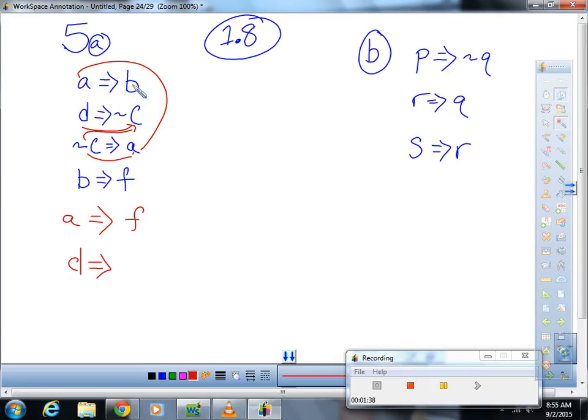That would also be a correct answer. These are just statements that are given to you, they don't represent anything, they're just letters. All right, so let's check out part B. What is one thing that we could say results from part B? Well, S goes to R and R goes to Q, so what could we say? S implies Q.